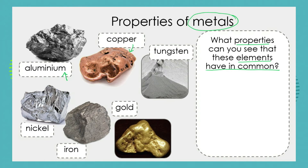Copper has this very distinctive colour. We're familiar with nickel and iron because these two substances appear in an alloy in our kitchens making up our stainless steel cutlery and pots. Of course we're familiar with gold in jewellery, and we also learned about tungsten, which makes up that filament inside incandescent light bulbs.